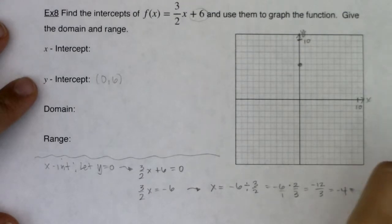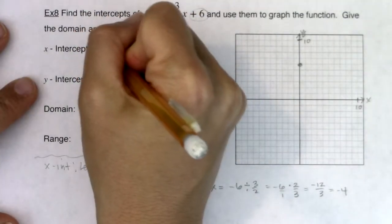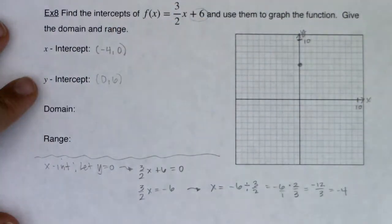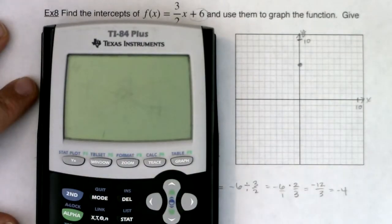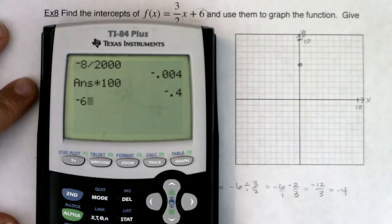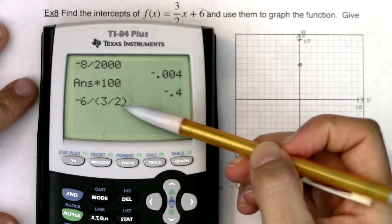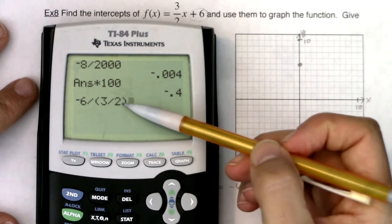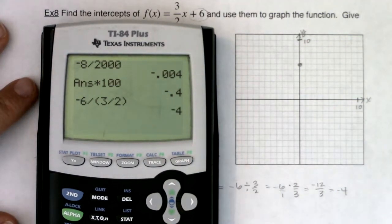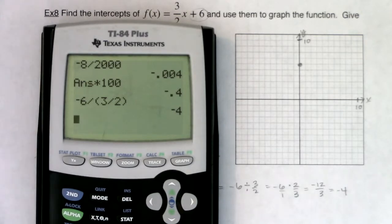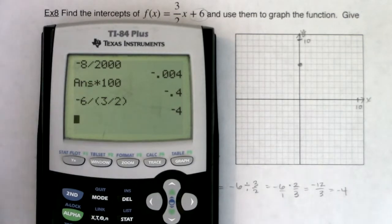All right, well, that would tell me then that the x-coordinate of my x-intercept is negative 4, and the y-coordinate is zero. And if you are having a bit of trouble with that fraction arithmetic, go ahead and use your calculator. Do negative 6 and divide it by three halves. But I do want to make mention, you need to be careful and put that denominator in parentheses. It makes a difference. So here I get negative 4. And I just want you to see what would happen if you didn't put parentheses around three halves.